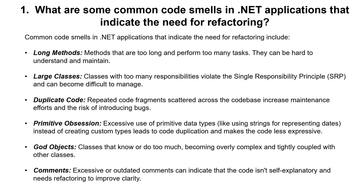The first question is about common code smells in .NET applications that indicate the need for refactoring. These include long methods — methods that are too long and perform too many tasks — which are hard to understand and maintain. Another smell is large classes: classes with too many responsibilities that violate the single responsibility principle and become difficult to manage. We also have code duplication, where repeated code fragments scattered across the code base increase maintenance efforts and the risk of introducing bugs.